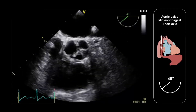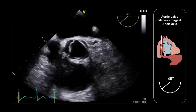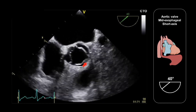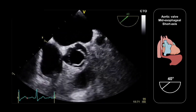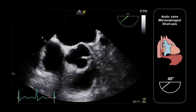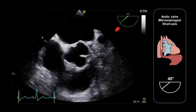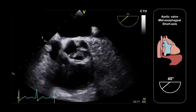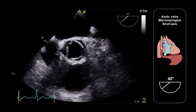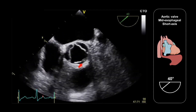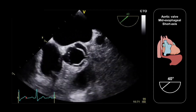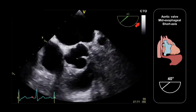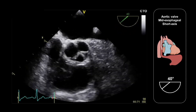In order to obtain the long axis view, I'd suggest starting with the aortic valve short axis view that we covered in our previous lesson. This is obtained with a transducer imaging plane angle of around 40 degrees, certainly somewhere between 25 and 45 degrees. Once you've obtained this view, rotate the imaging plane forwards by 90 degrees to obtain the long axis view.